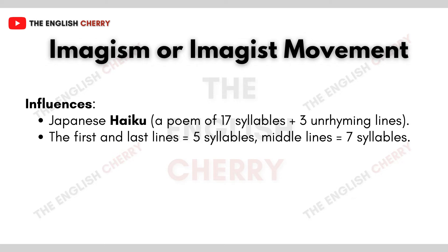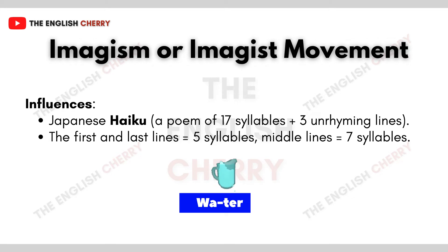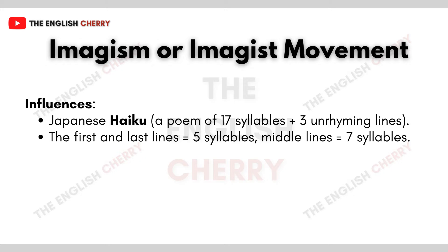The influence that the Imagist poets had was the Japanese haiku poem. Haiku is a Japanese word meaning a small three-line poem that consists of 17 syllables. Syllables refer to the sounds a word has — for example, 'water' has two syllables: 'wa' and 'ter'. In haiku, the first and last lines have five syllables while the middle line has seven syllables.